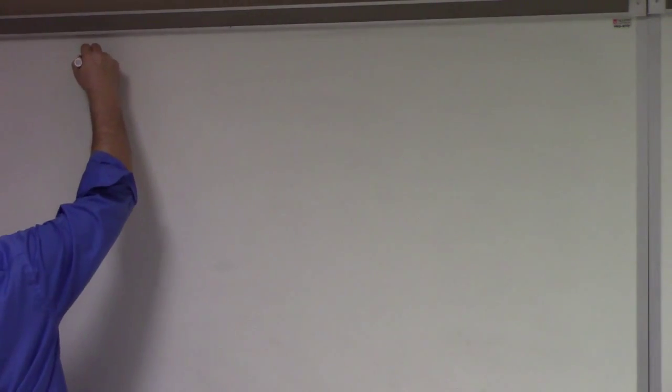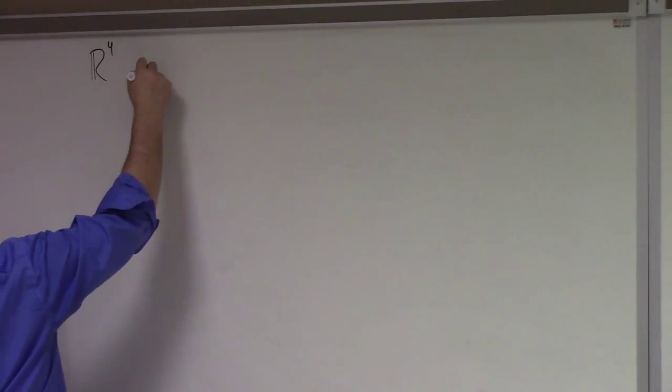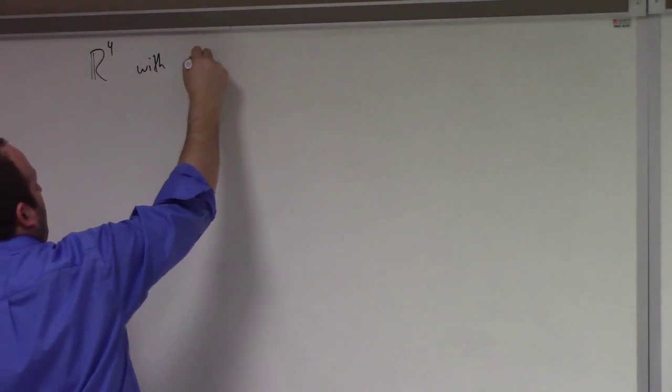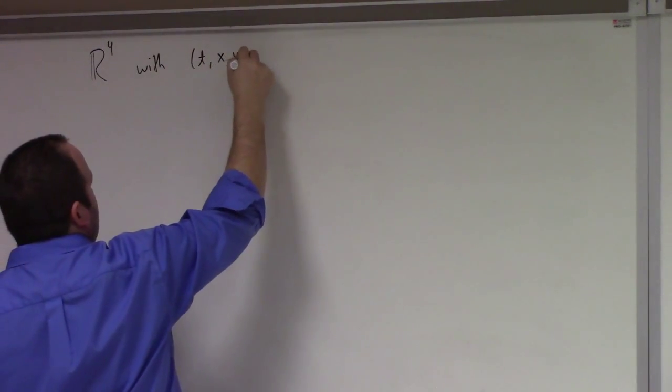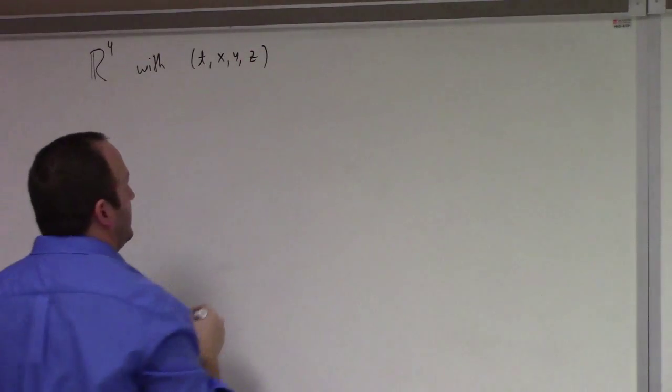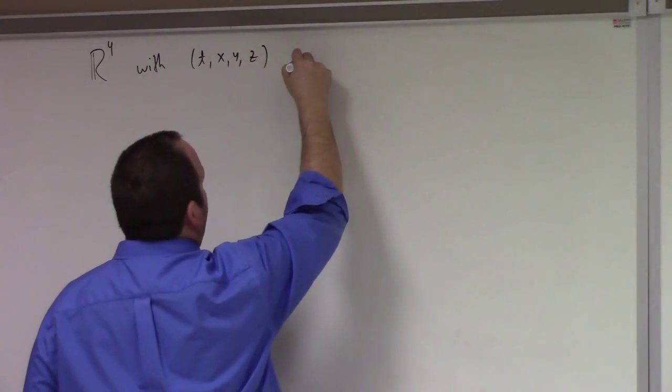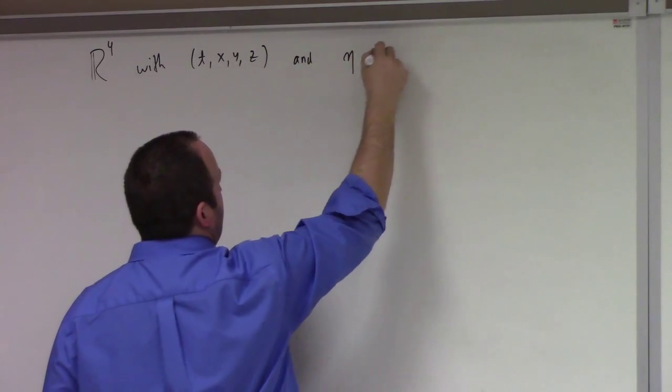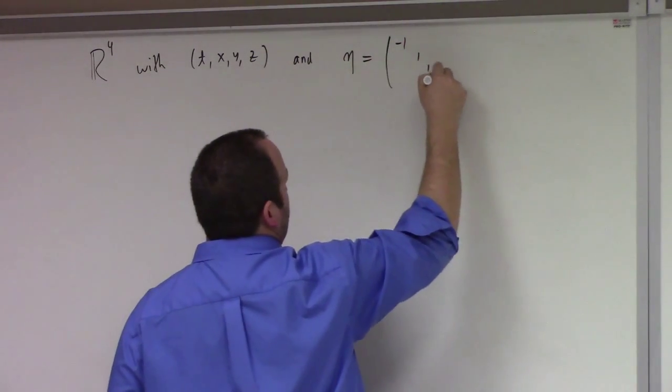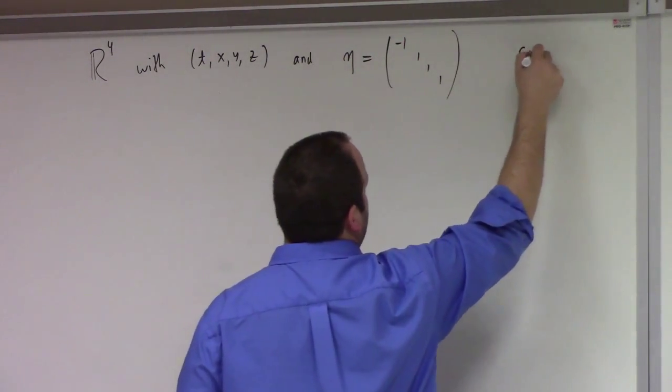Consider R^4 with T, X, Y, Z, where T is time and X, Y, Z are space. We'll give it the metric minus 1, 1, 1, 1. Now in terms of physics, I'm setting C equal to 1.